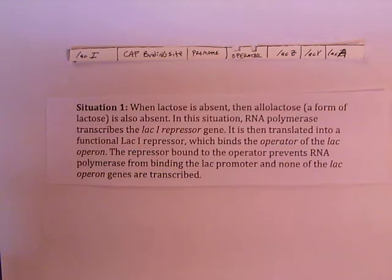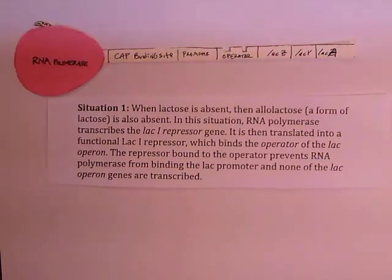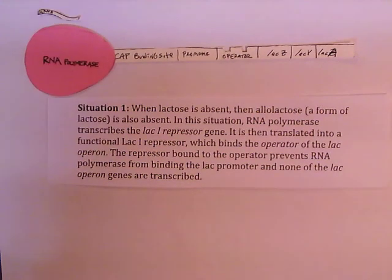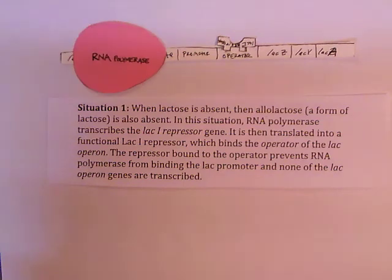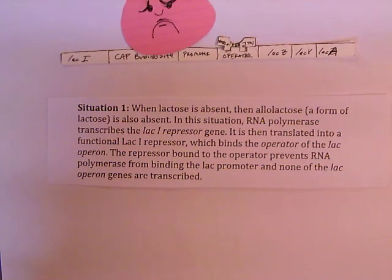Situation 1: When lactose is absent, then allolactose, a form of lactose, is also absent. In this situation, RNA polymerase transcribes the lacI repressor gene. It is then translated into a functional lacI repressor, which binds the operator of the lac operon. The repressor bound to the operator prevents RNA polymerase from binding the lac promoter, and none of the lac operon genes are transcribed.